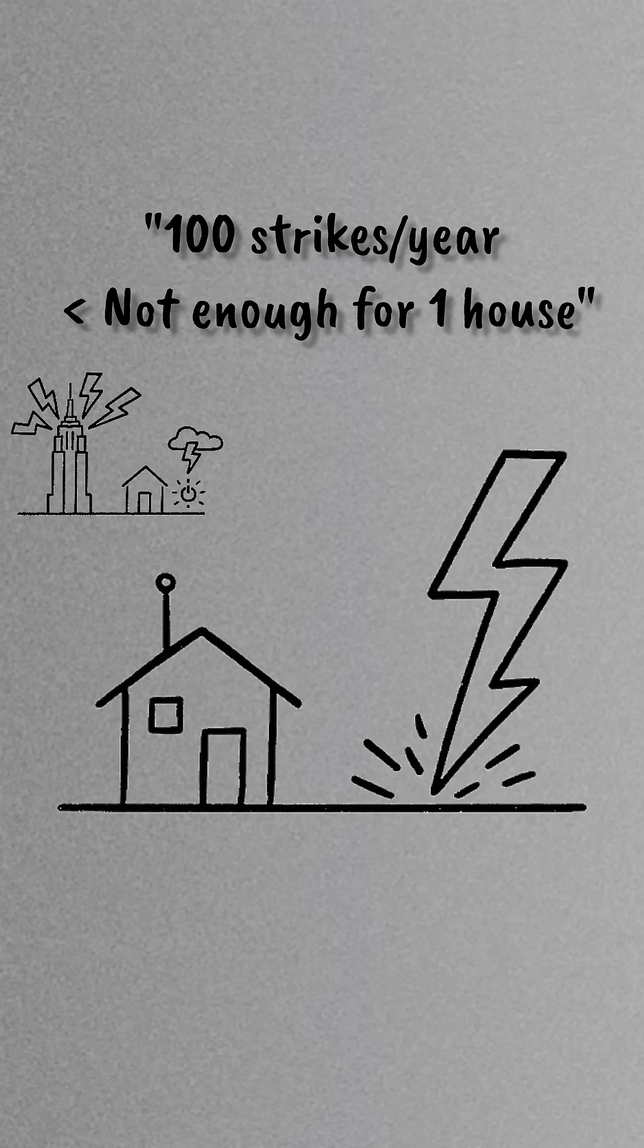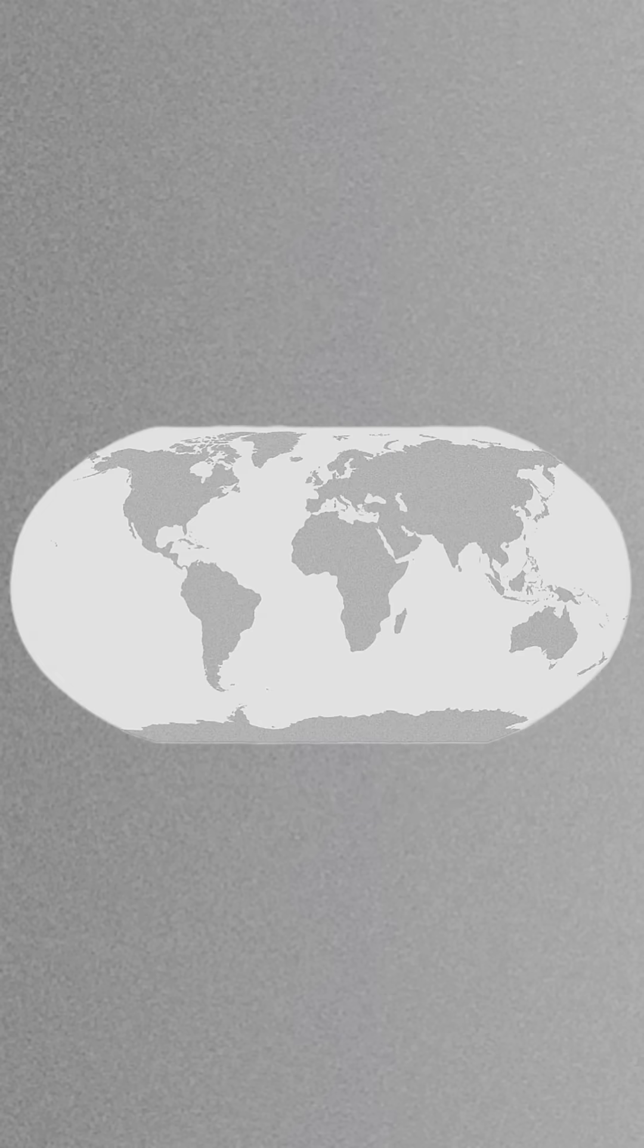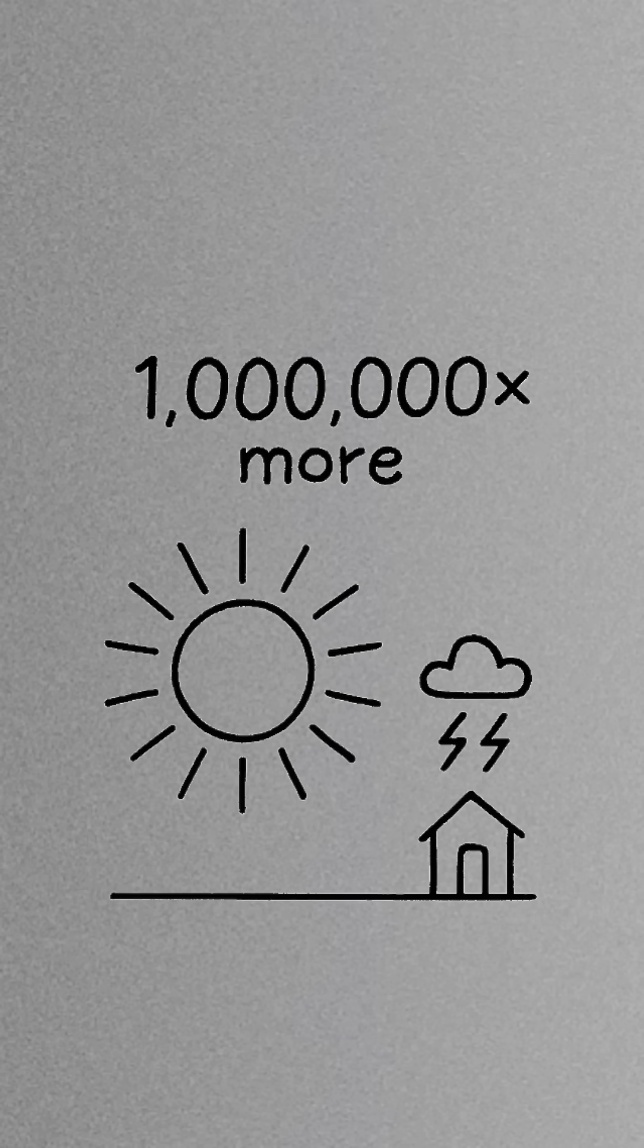Even in regions of the world with a lot of lightning, such as Florida and the eastern Congo rainforest, the power delivered to the ground by sunlight outweighs the power delivered by lightning by a factor of a million.